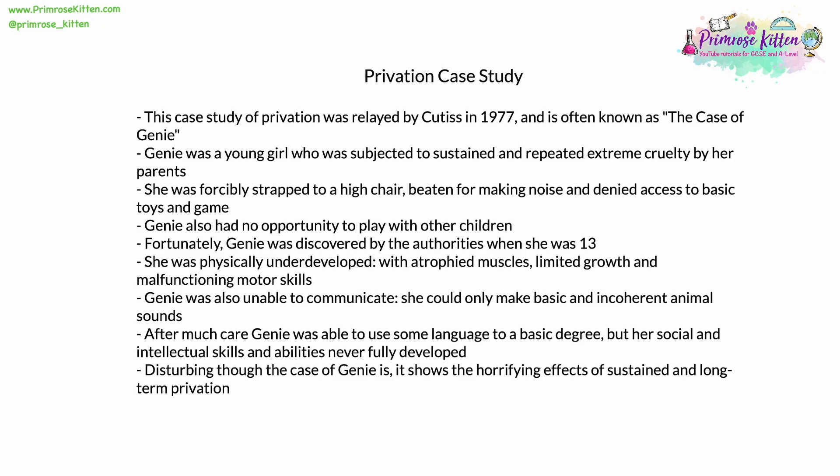Genie also had no opportunity at all to play with other children, because of her isolation and her parents' strong desire not to be found. Playing with other children is an important part of a child's development and how they learn to make normal social and emotional connections. Fortunately, Genie was discovered by the authorities when she was 13. She was physically very underdeveloped, with atrophied muscles, very limited growth, and very malfunctioning motor skills. She had very limited use of her limbs and couldn't make fine movements at all. Critically, Genie was also unable to communicate — the best she could do was make basic, completely incoherent animal noises: growls, snarls, and yelps.